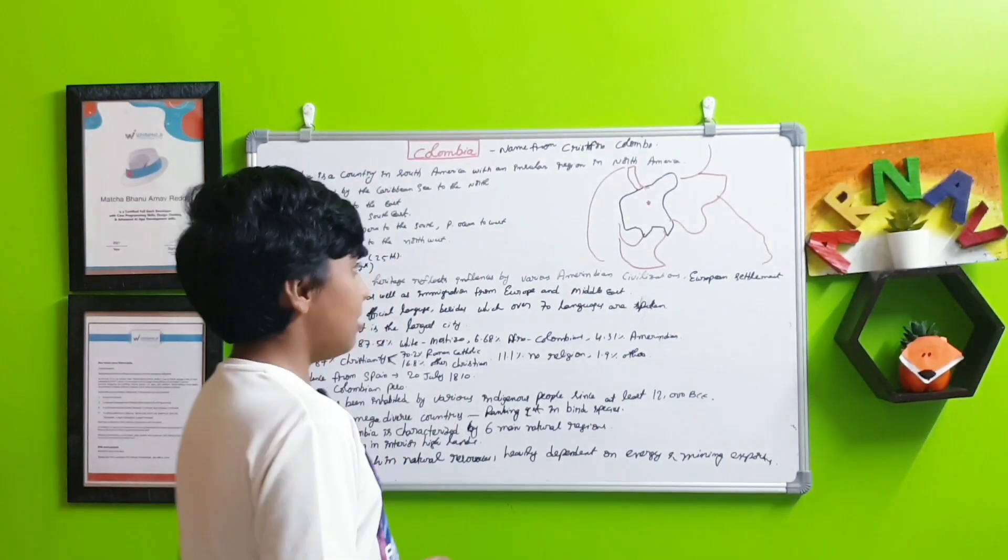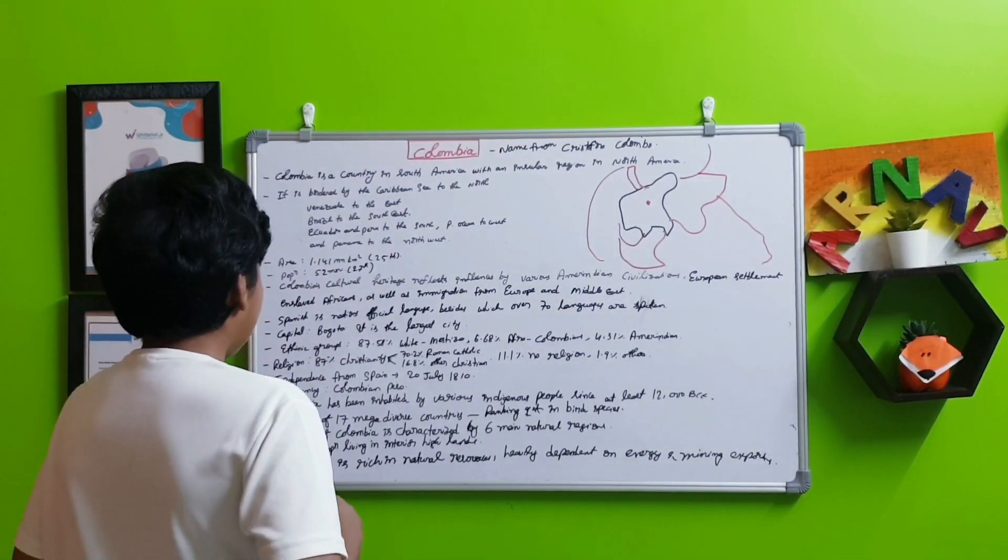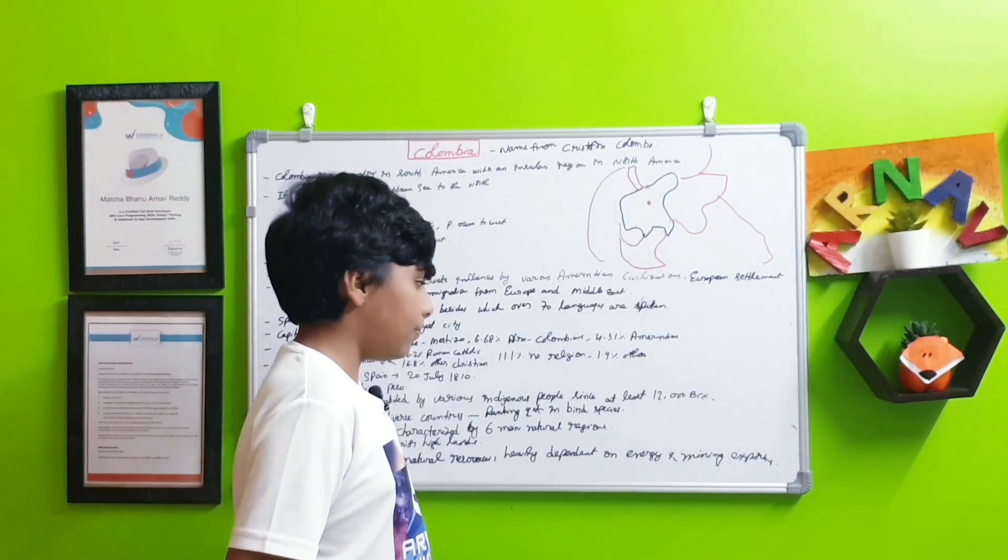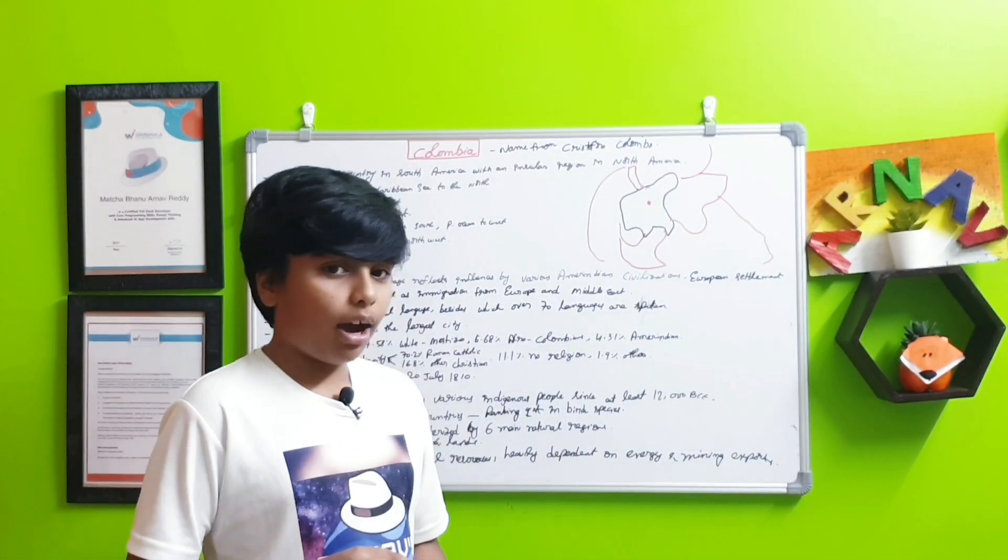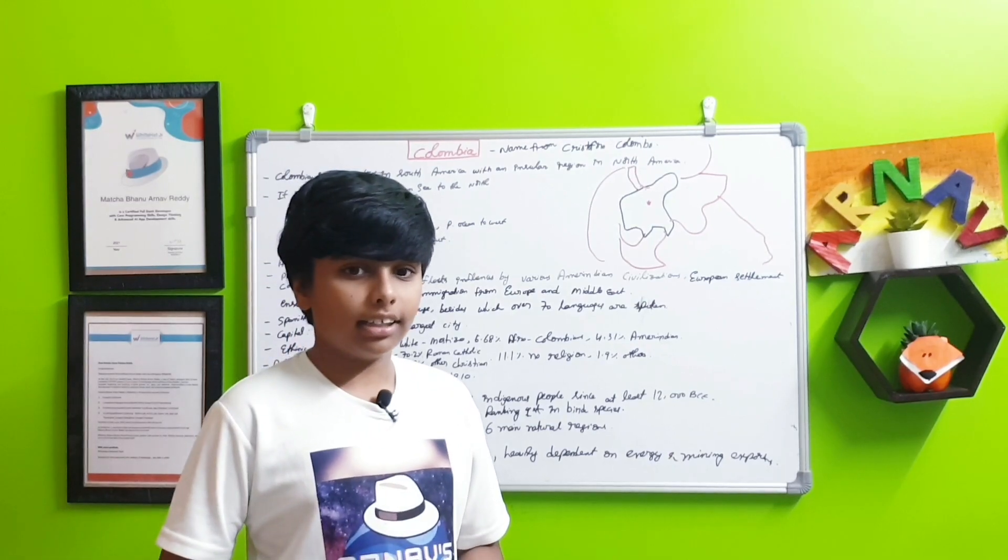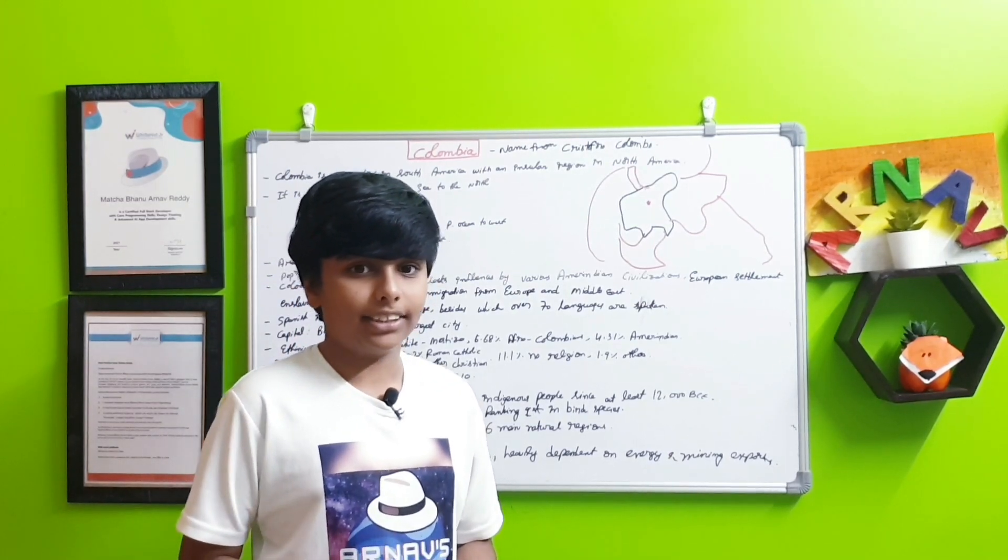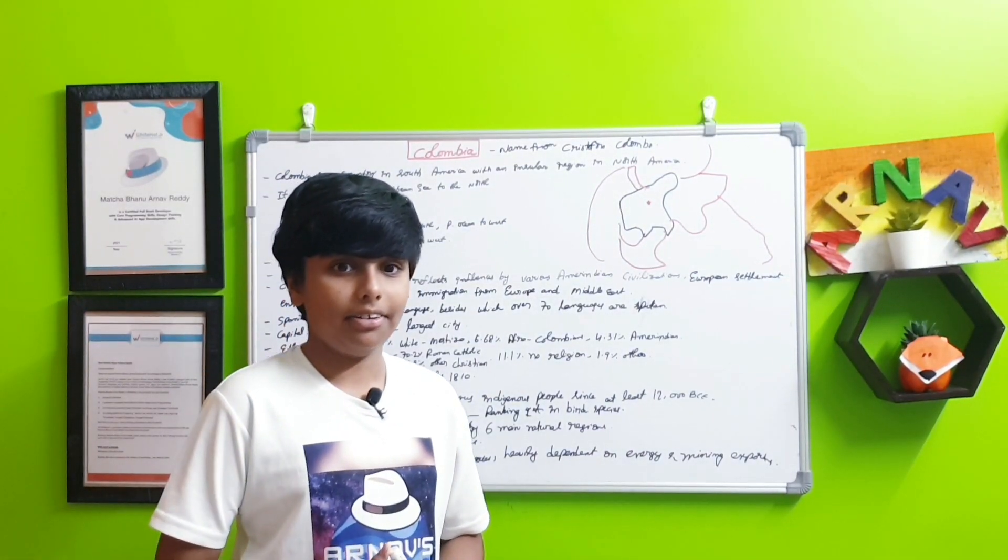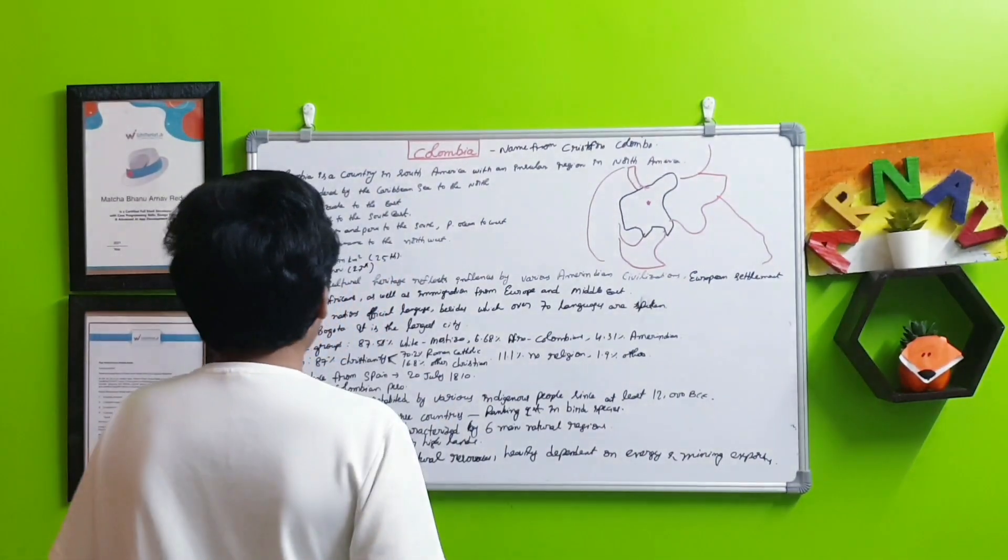Colombia has been inhabited by various indigenous people since at least 12,000 BC. That's a very long time ago. It is one of the 17 megadiverse countries.